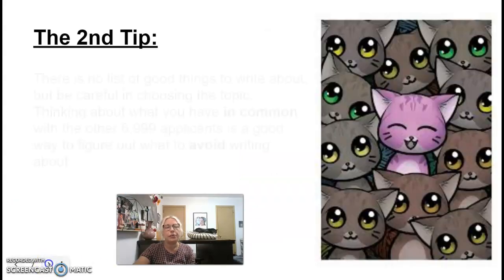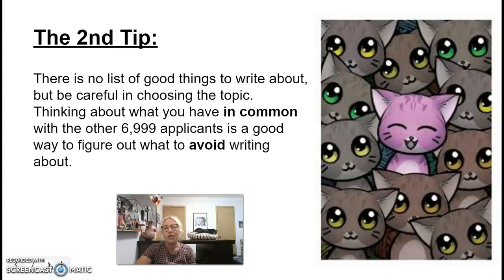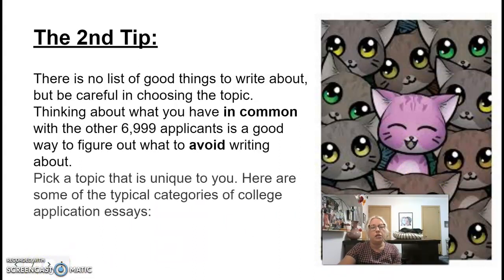The second tip: there's not really a list of good things to write about, but be careful in choosing your topic. Thinking about what you have in common with the other 6,999 applicants is a good way to figure out what to avoid. You want to write about something that is unique to you — something that's going to make you stand out. There are some typical categories of college application essays, and I'll go through what those are.